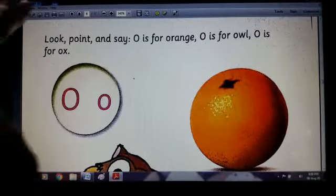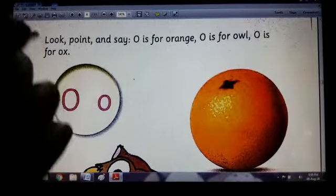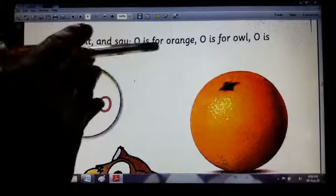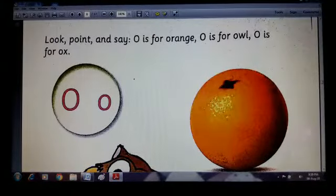This is capital letter O and this is small letter O. You have to write in your copies. Now look, point and say: O is for orange, O is for owl, and O is for ox.